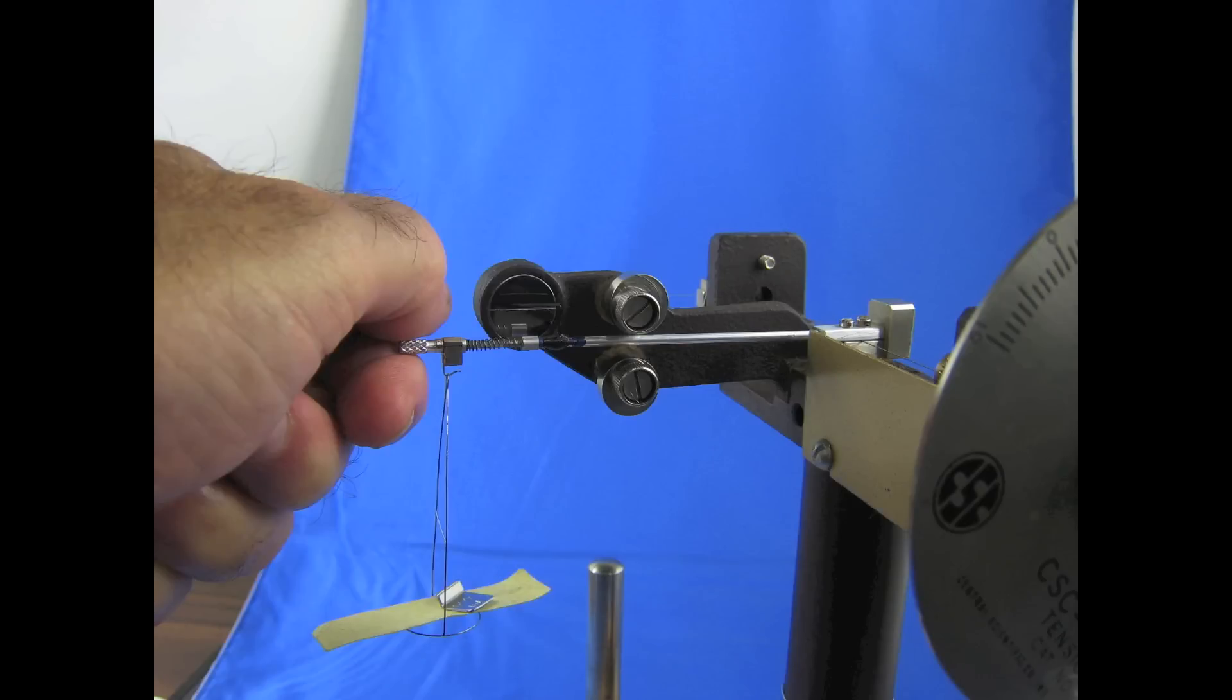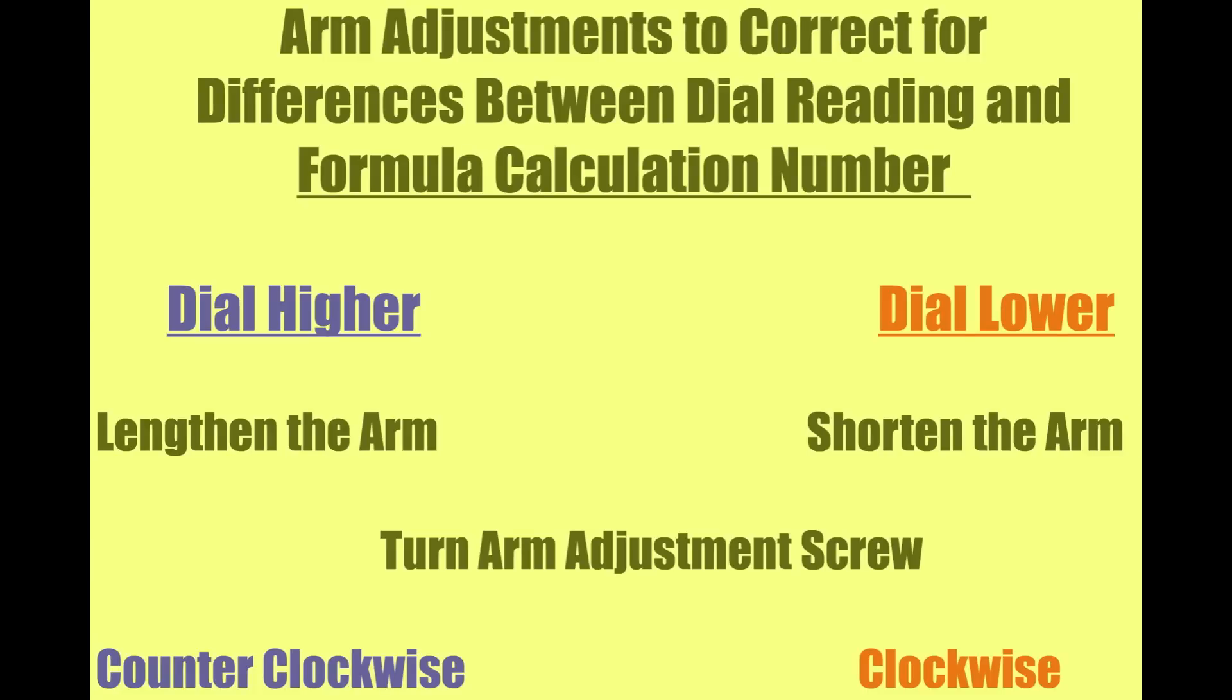If the calculated number is greater than the dial reading, use the torsion arm adjustment nut and turn it counterclockwise. If the calculated number is lower than the dial reading, turn the adjustment nut clockwise. One full rotation is about three dynes per centimeter. Repeat this until you can bring the pointer to the line.